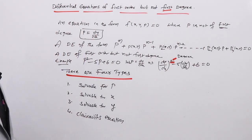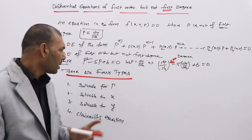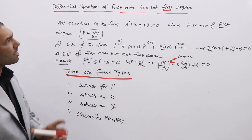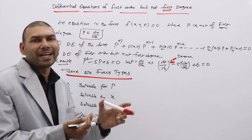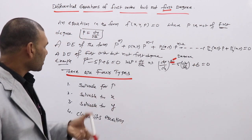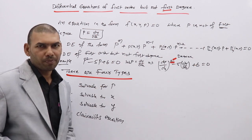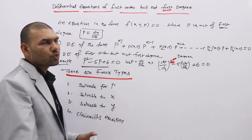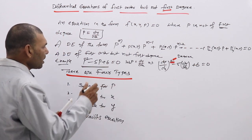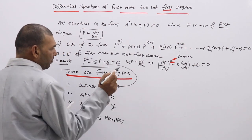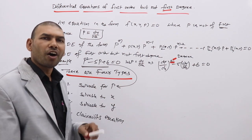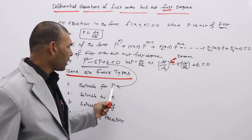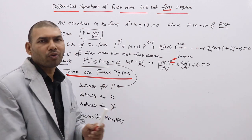Now we are going to discuss how to solve a DE of first order but not first degree — which is in the form solvable for p, solvable for x — how to solve, how to identify, that we are going to discuss. The first one is solvable for p. These type of equations contain only p terms; this equation p² - 5p + 6 = 0 is one best example for solvable for p.